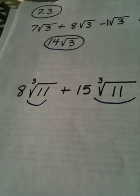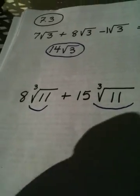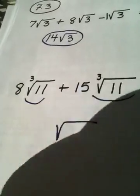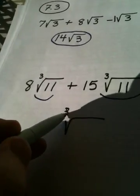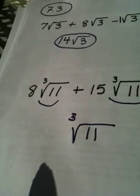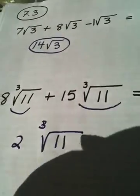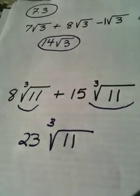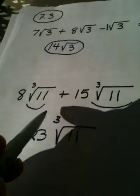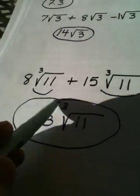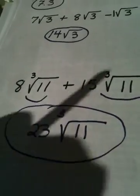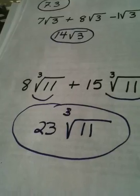Whenever you're adding radicals or subtracting them, they need to be like. So, all I do is I leave the cube root of 11, and I add what's in front. 8 plus 15 is 23, and I'm left with the answer 23 times the cube root of 11.